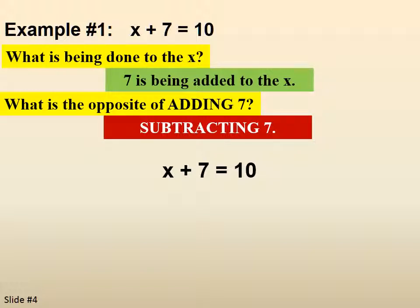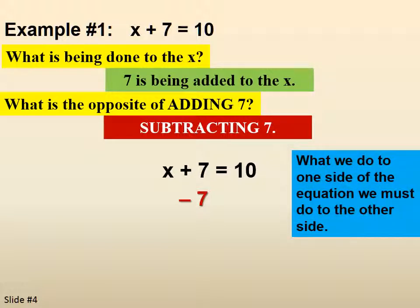So x plus 7 equals 10. So we're going to subtract 7. Now, whatever we do to one side of an equation or an inequality, we must do to the other side. So we're going to subtract 7 from both sides. We need to think of the equal sign as being the fulcrum or the center point on a teeter-totter or a seesaw. Whatever you do to one side, you have to do to the other to keep it balanced. So now we subtract. Bring the x down. Positive 7 minus 7 gives us 0. And then 10 minus 7 gives us 3. So x is 3.